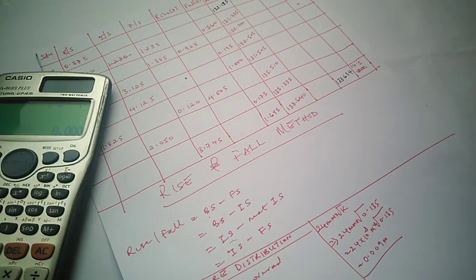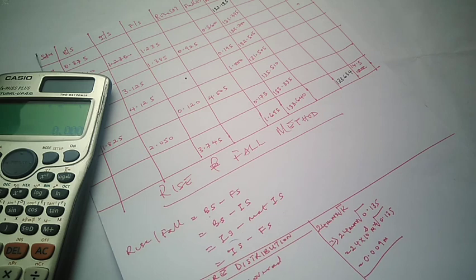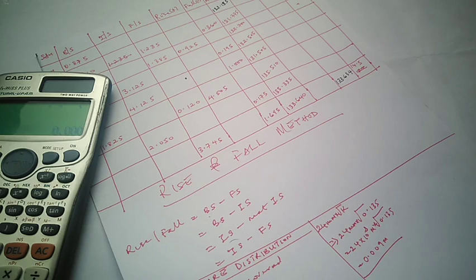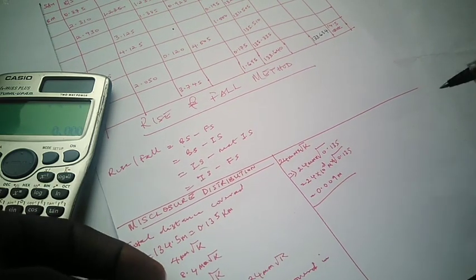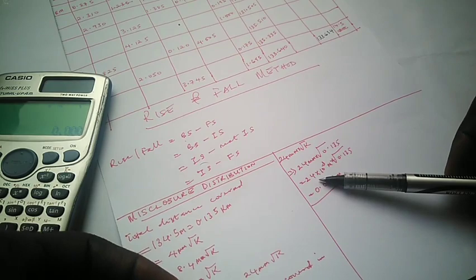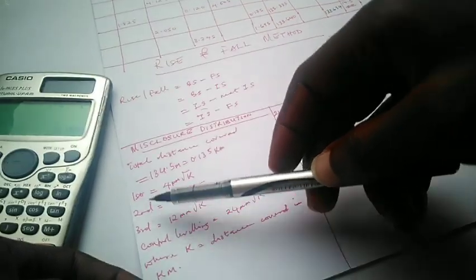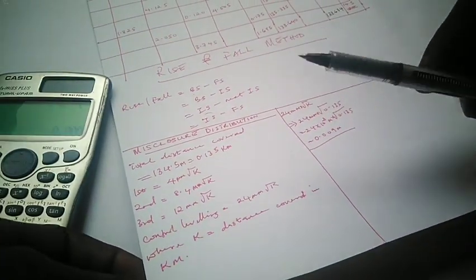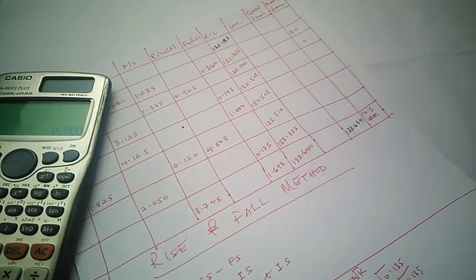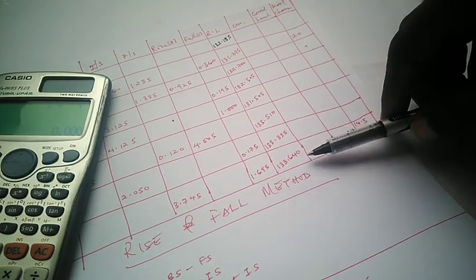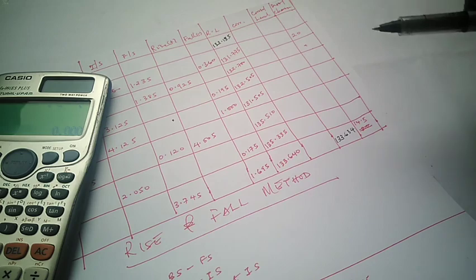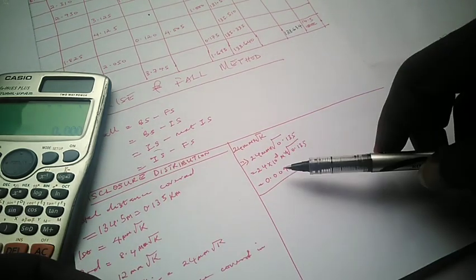Hello guys, welcome to Surveying Solutions, your number one channel where you get solutions to all your surveying problems. Today we are going to continue on our leveling computation which we've started. On our last video we showed you how to compute your reliable misclosure for any particular leveling exercise using first order, second order, third order, or control leveling. On this video we are going to show you how to apply it in your computation.